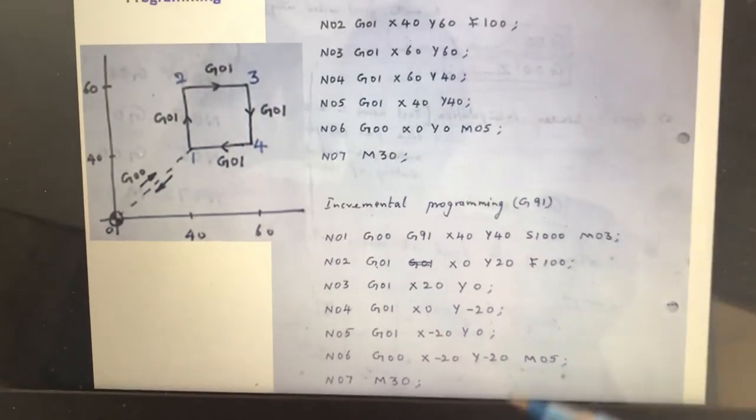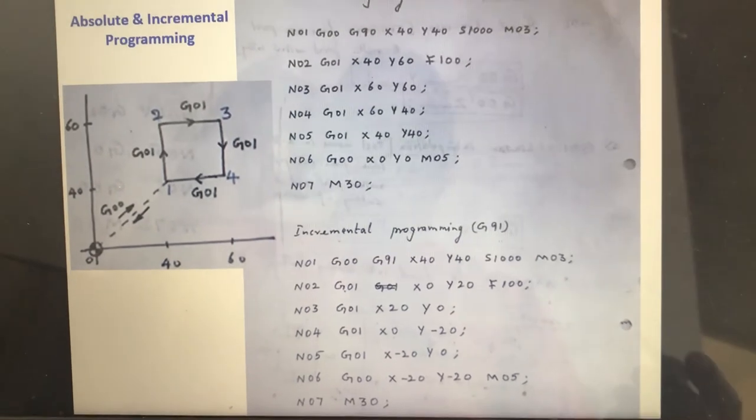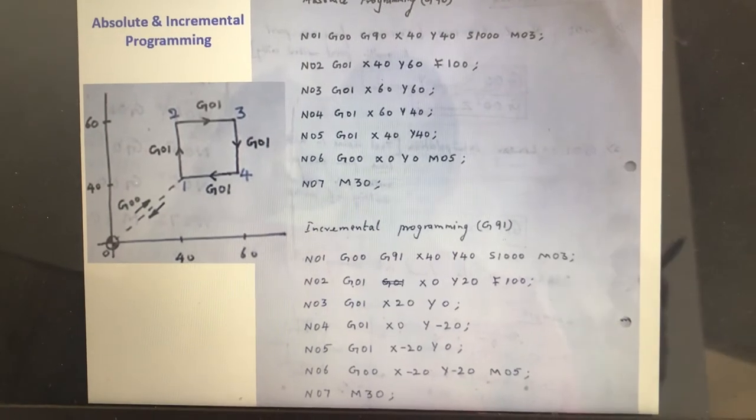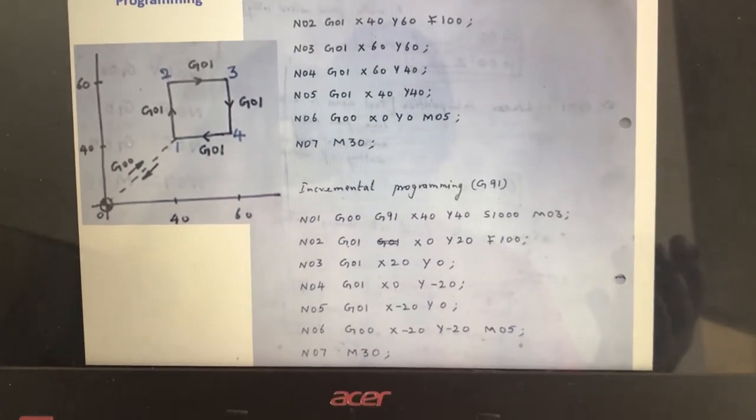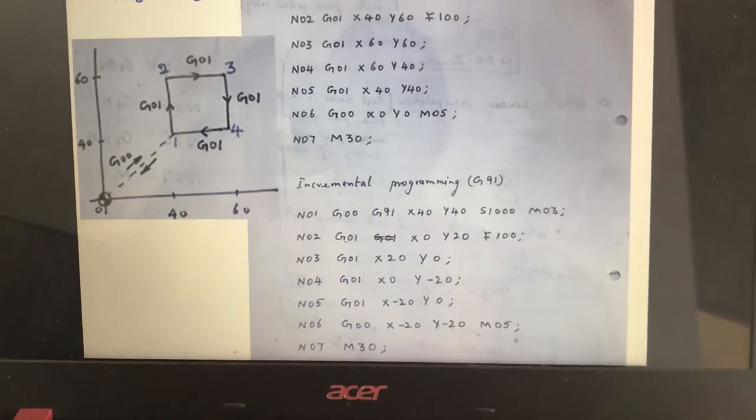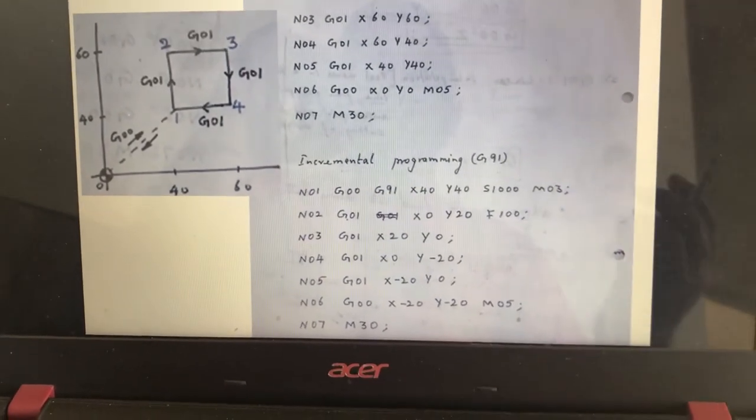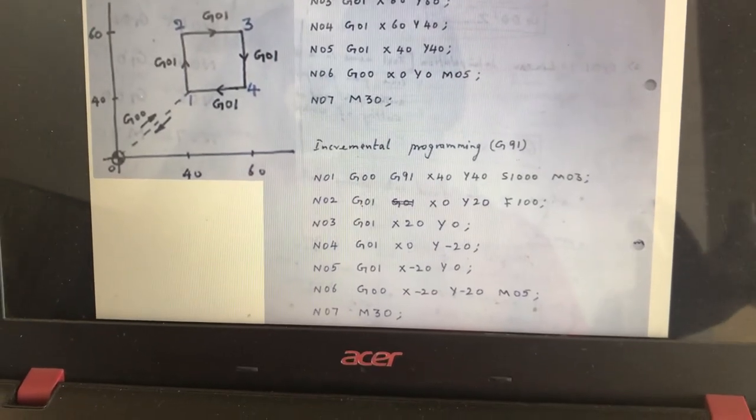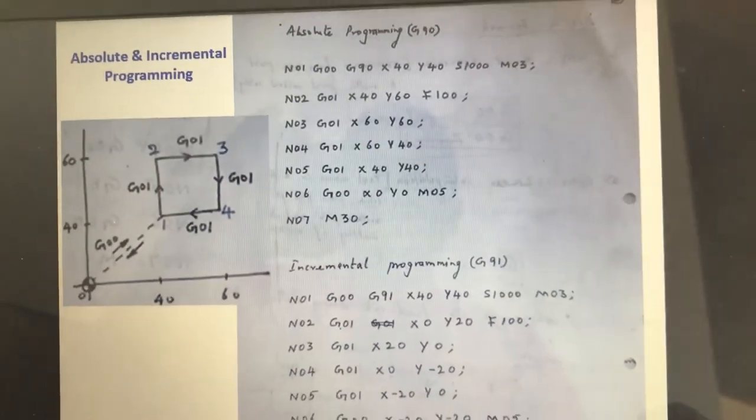Why these two types of programming methods exist depends upon the complexity of the product. If the product used for programming is of complicated shape where we feel difficult to measure the distances of X, Y from one fixed origin, then we adopt incremental positioning method where we change the origin and take the measurement of X, Y. That depends upon the complexity of the product.